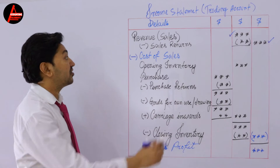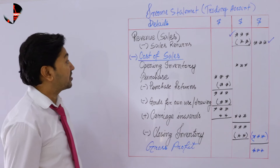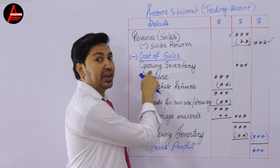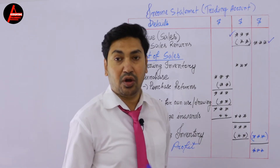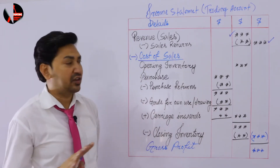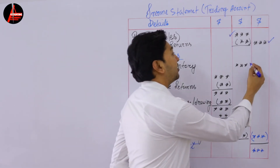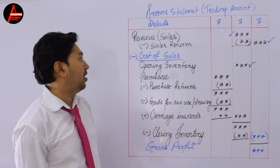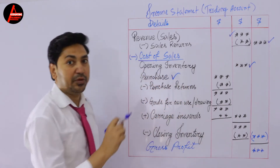After that, you should write cost of sales. What belongs to cost of sales? The first one is opening inventory. This opening inventory would be included in the trial balance — most of the time you will get this inventory there, sometimes it will not be given. Take this opening inventory and write the value here in the middle column.